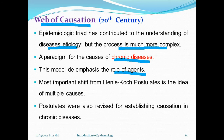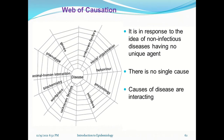The web of causation emphasizes chronic disease. The most important shift from Koch's postulates is the idea of multiple causes. This model believes in multiple causes, whereas Koch's postulate states one cause for one disease. The postulates were also revised for establishing causation in chronic disease. In this model there is no unique agent.